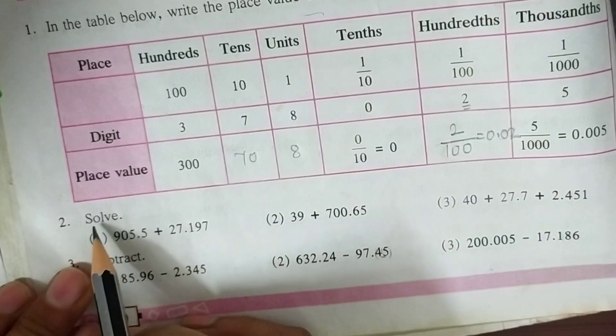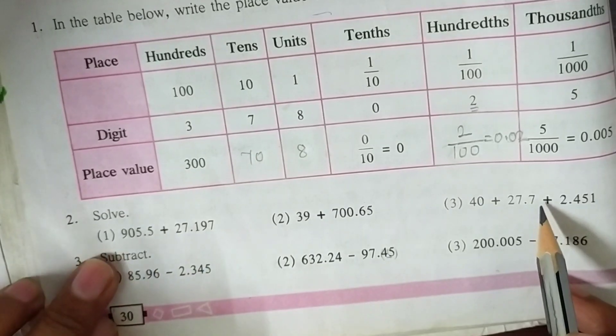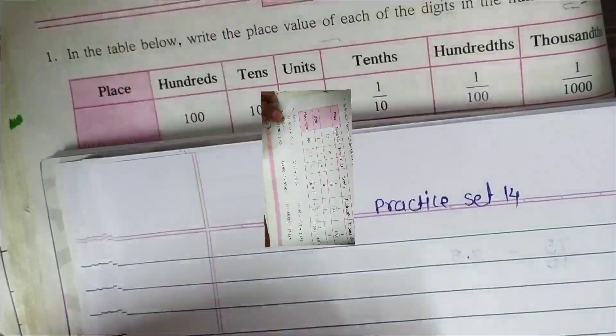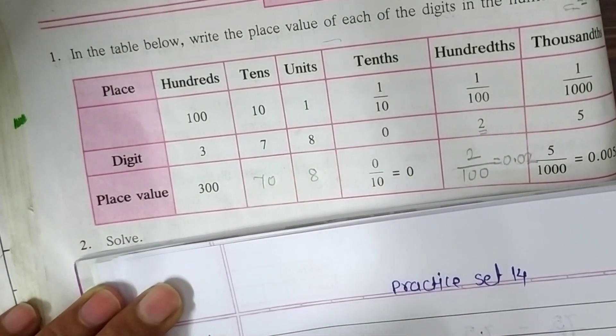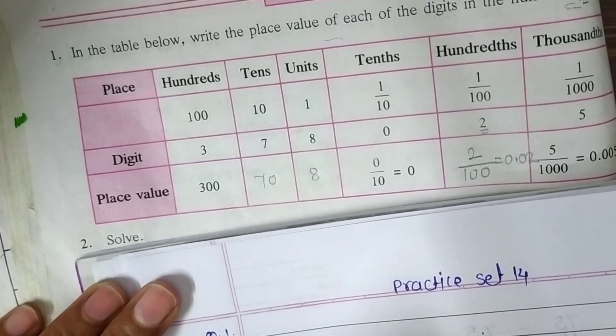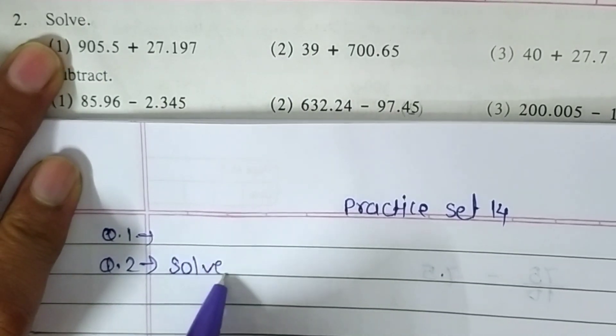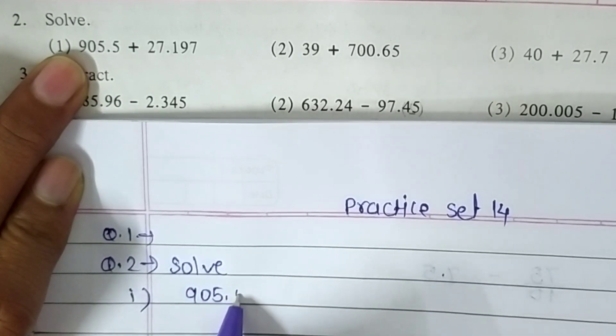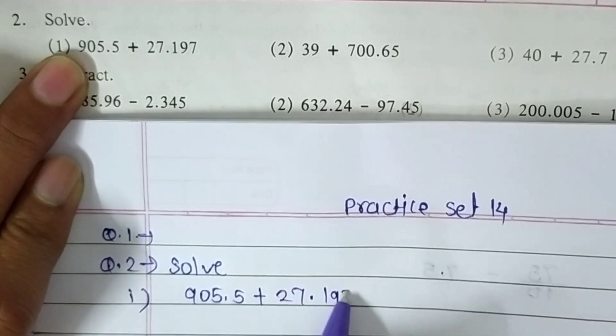Let's look at the second question: solve. Here, they use additions of decimal fractions. We are going to add them. Write the first question in your notebook and then write the second question. The first question is 905.5 plus 27.197.